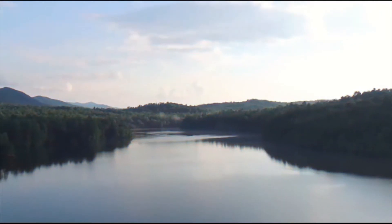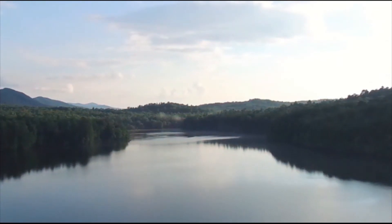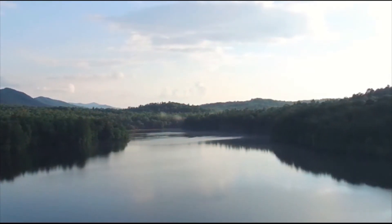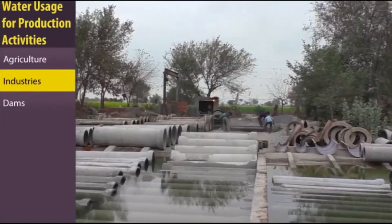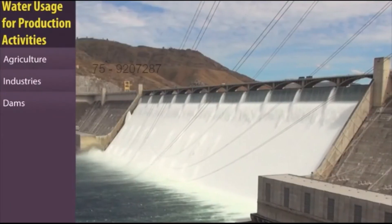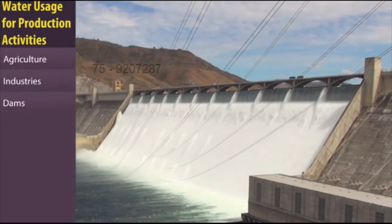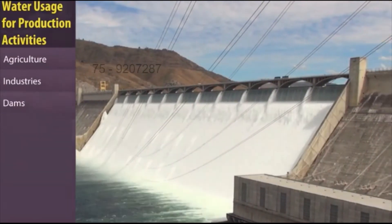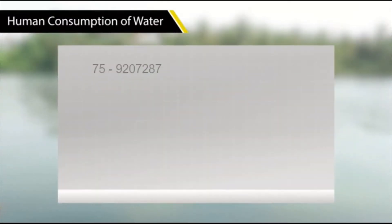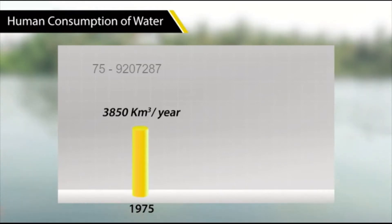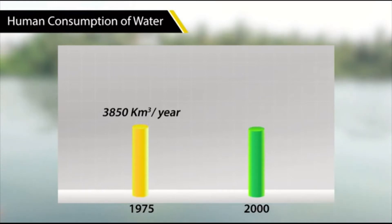All over the world, huge amounts of water are used in production activities like agriculture, industries, and generating electricity through reservoirs and dams. In 1975, human consumption of water was 3,850 cubic kilometers per year. By 2000, this figure had gone up to 6,000 cubic kilometers a year.